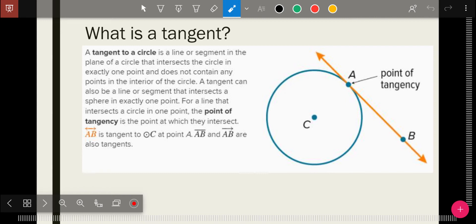And so at this point in the unit, you should be able to draw, if I gave you a blank circle, a chord, a diameter, a radius, and now a tangent.